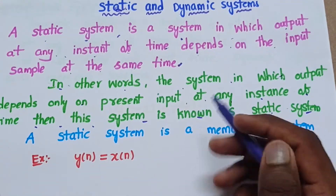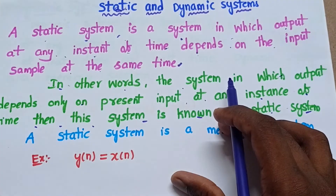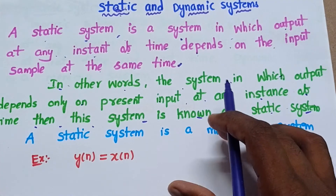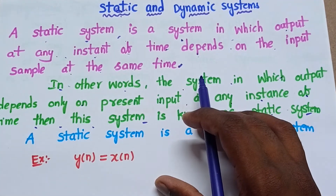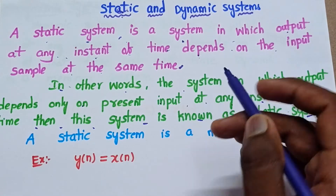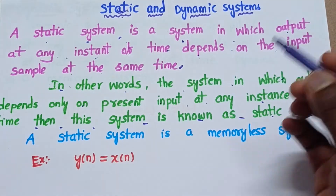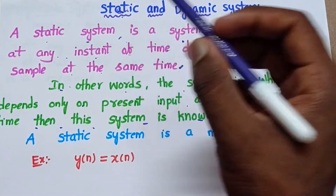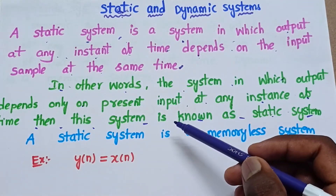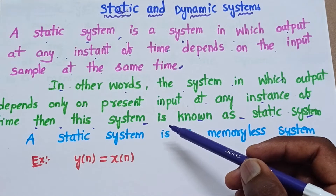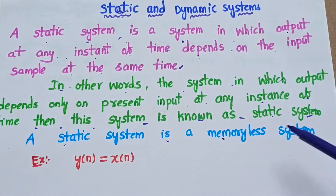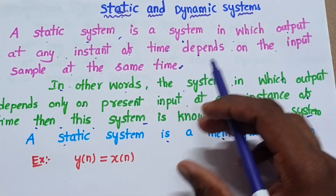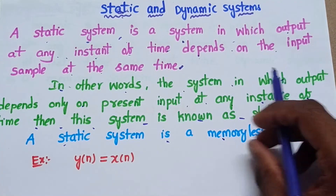In other words, if our system has an input and output, then the output of the system only depends on the present input value. The present output value of the system only depends on the present input value — then the system is known as a static system. One more important point: a static system is a memoryless system.